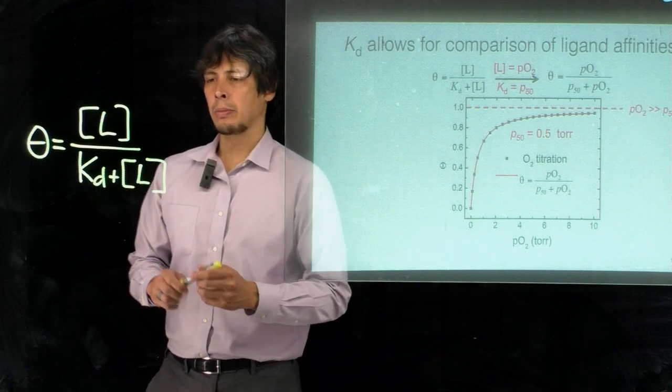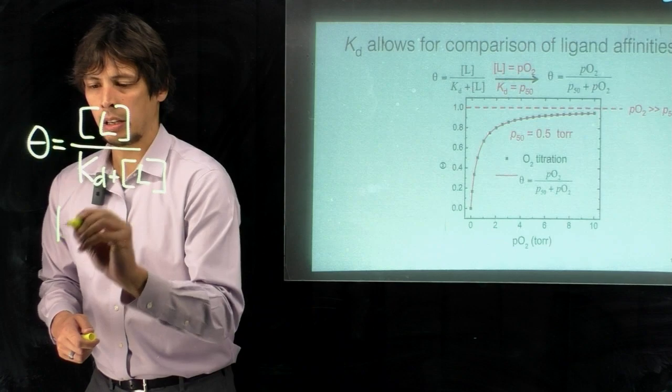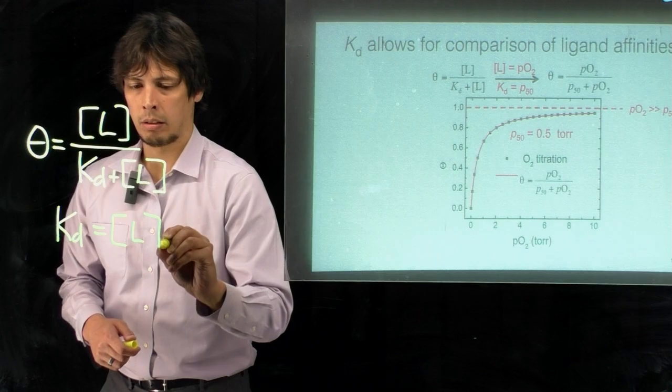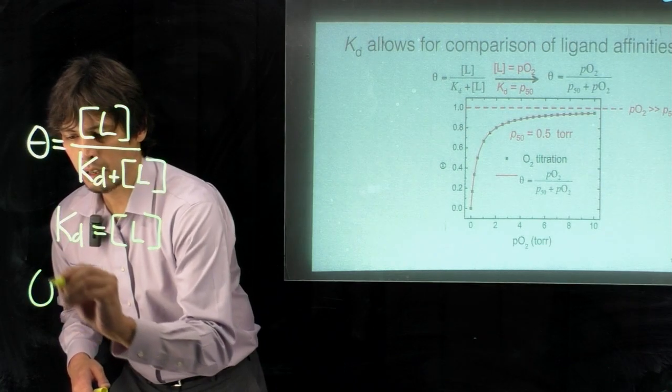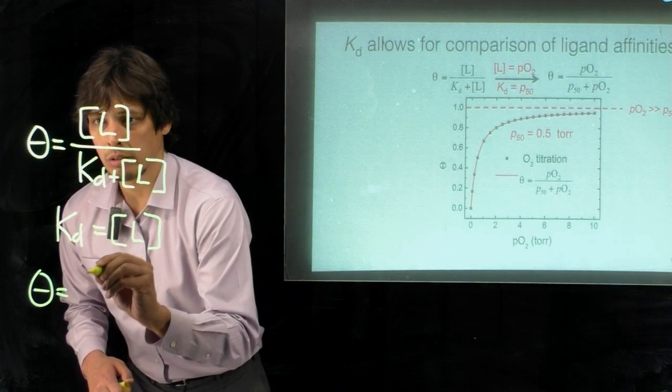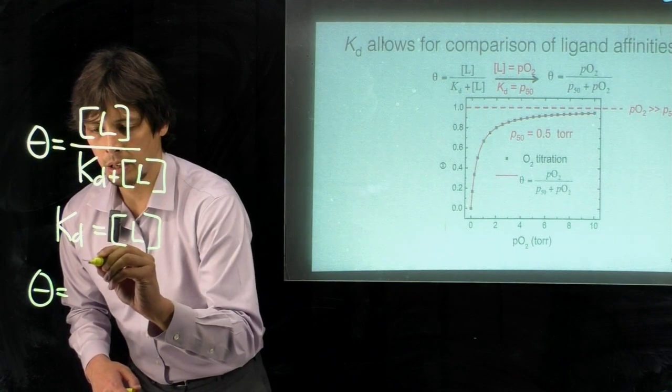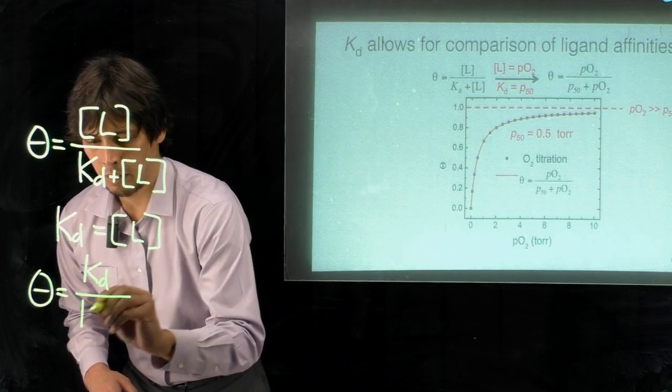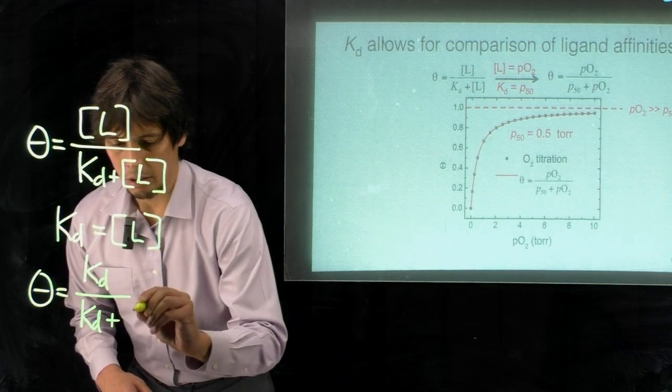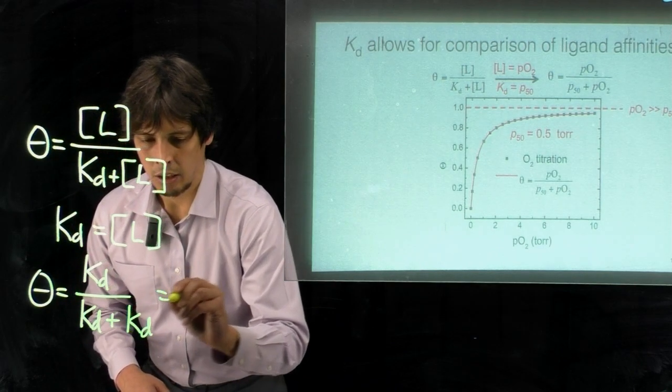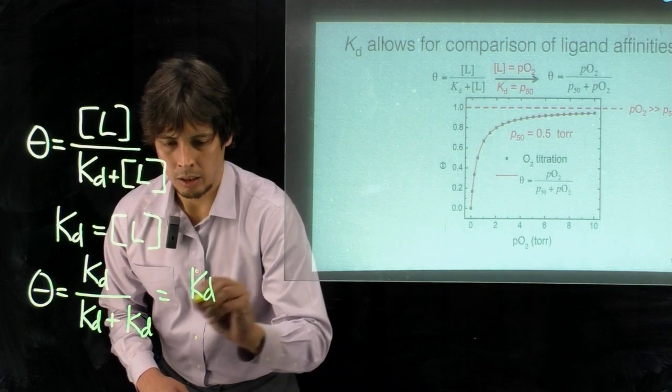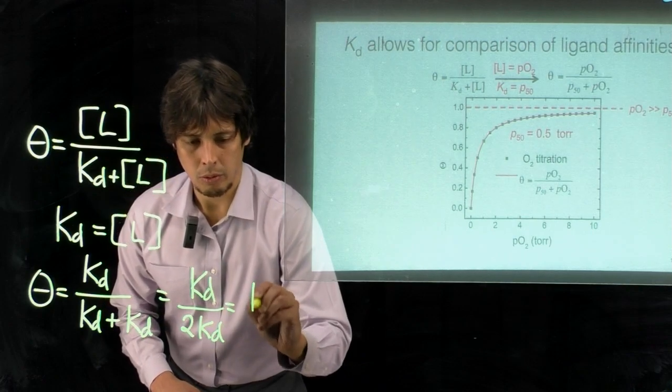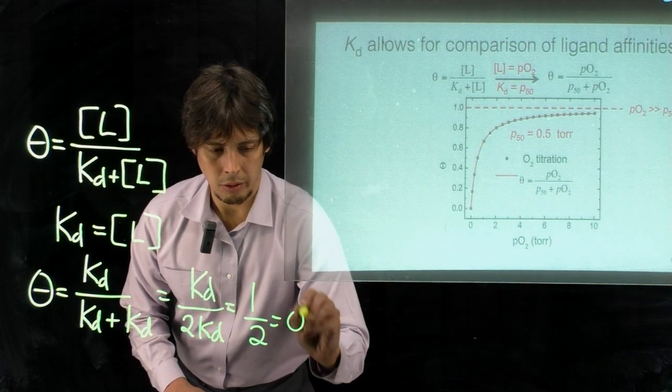Another special case for this equation is when we set KD equal to L. So in this case we substitute in KD or L, so we'll substitute KD where there are ligand concentrations and we get KD over 2KD which is equal to one-half or 0.5.